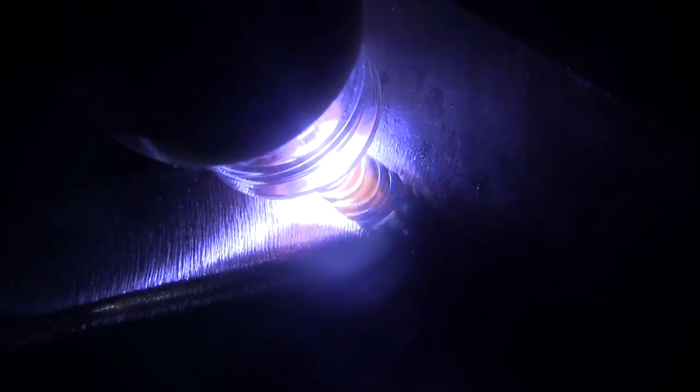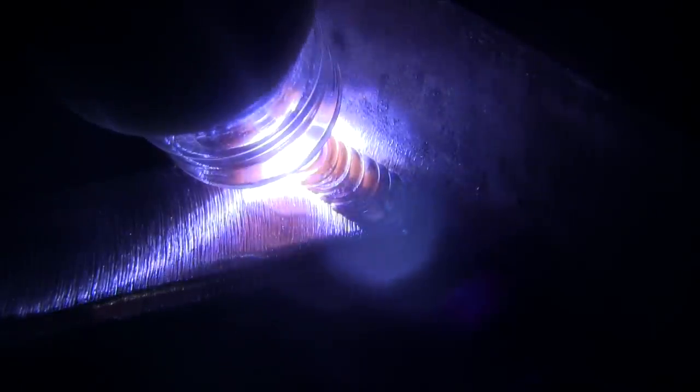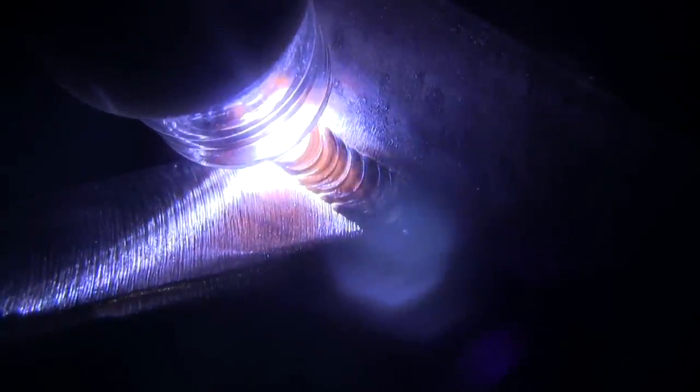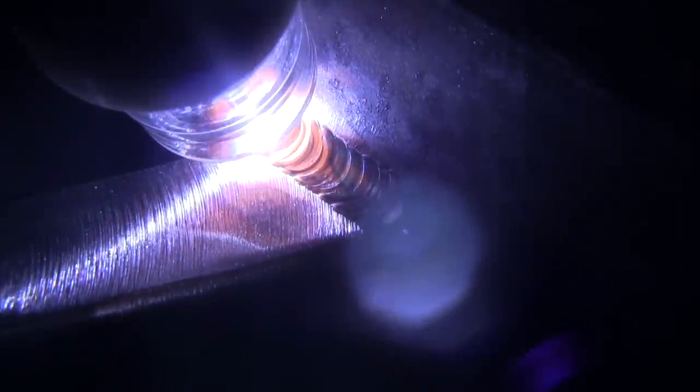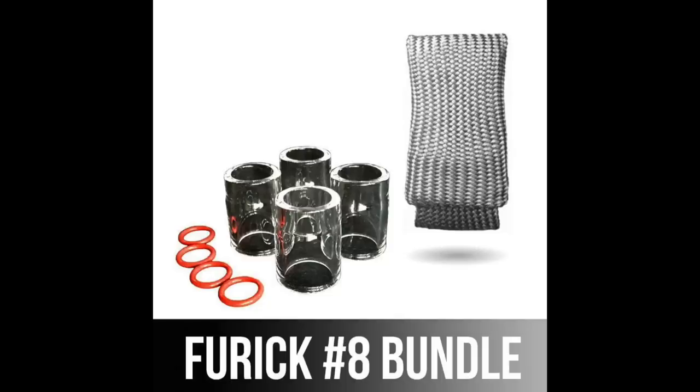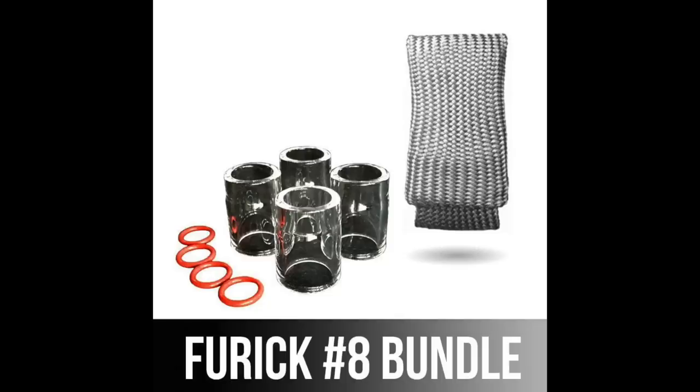But you can kind of see this one really lighting up the area around the weld in addition to being able to see the puddle through the cup. Also got a bundle on those if you get a TIG finger in addition to the Furic eight cups you get a savings.